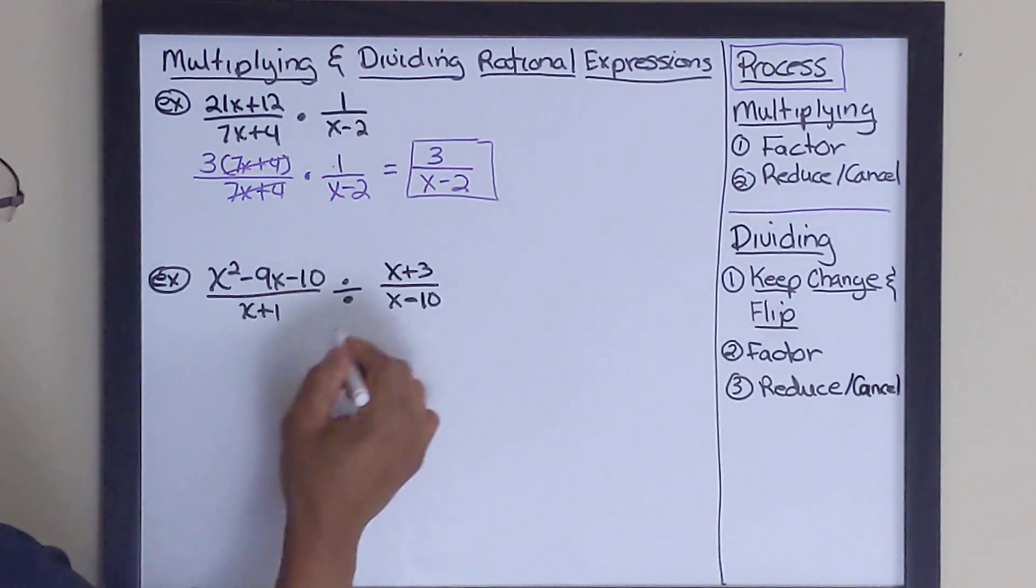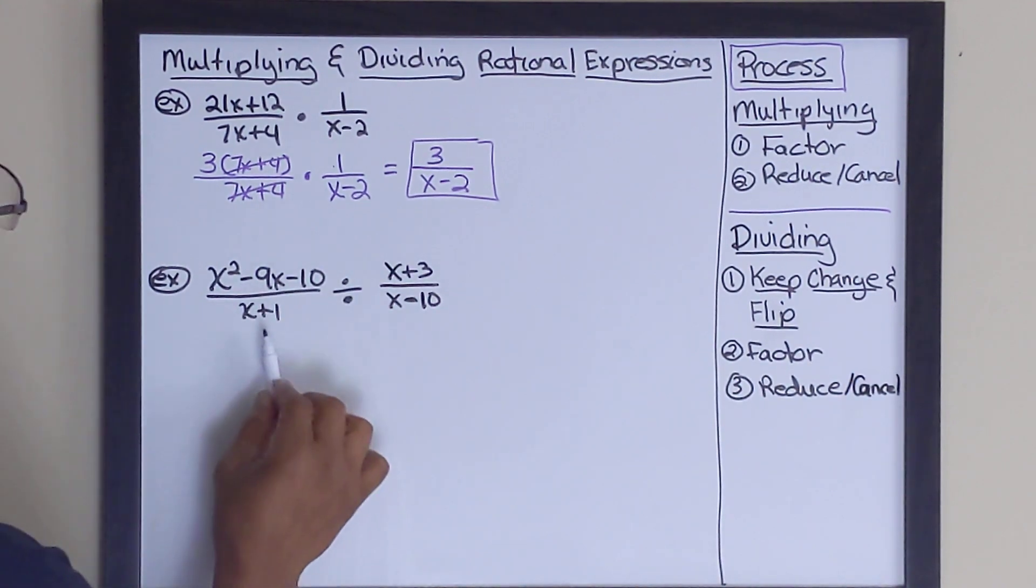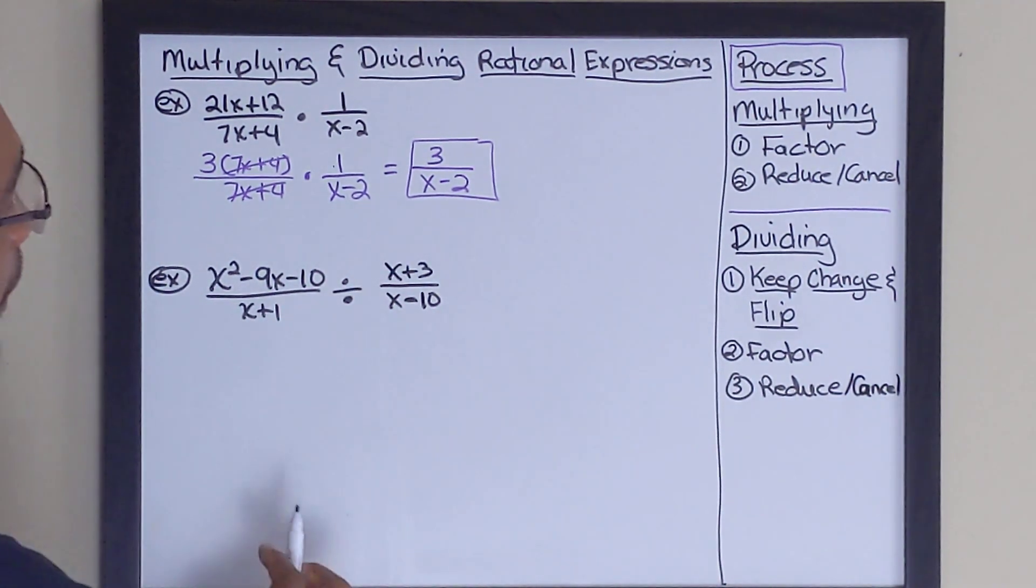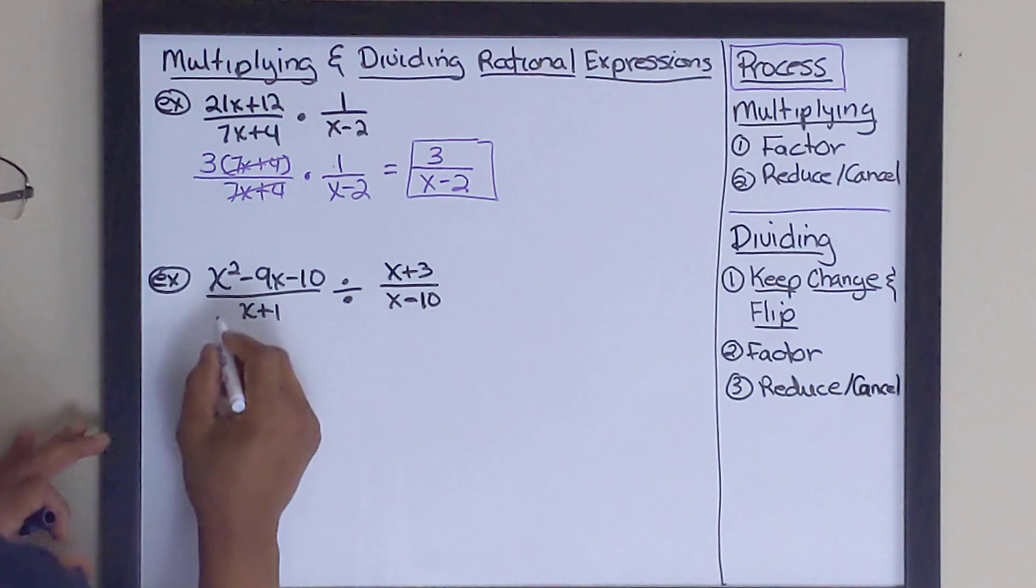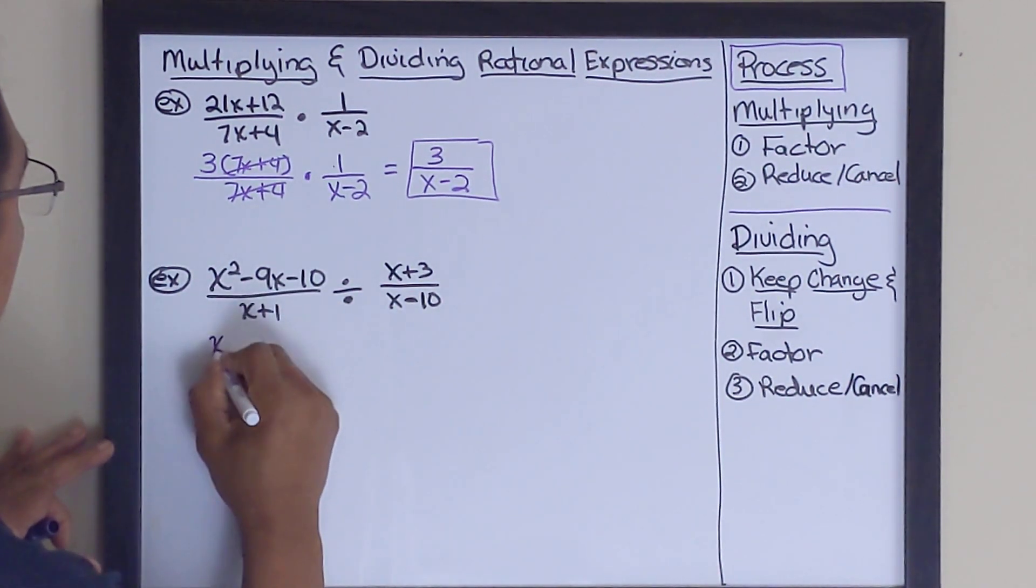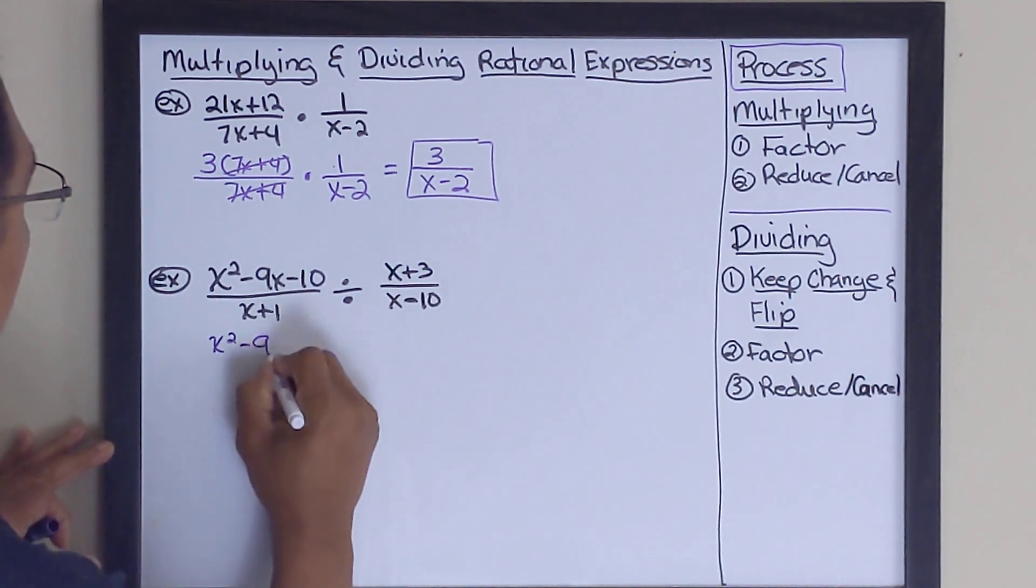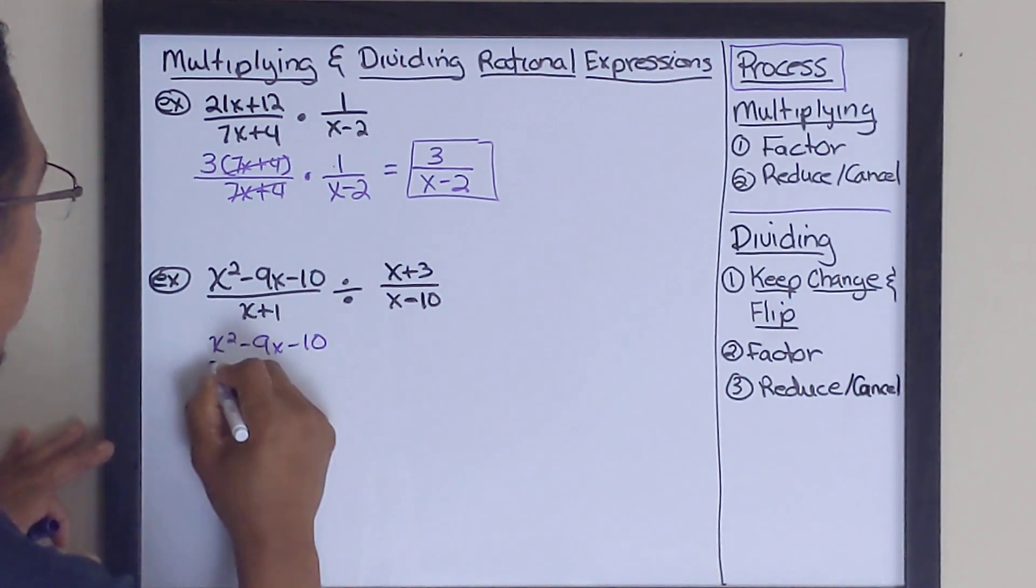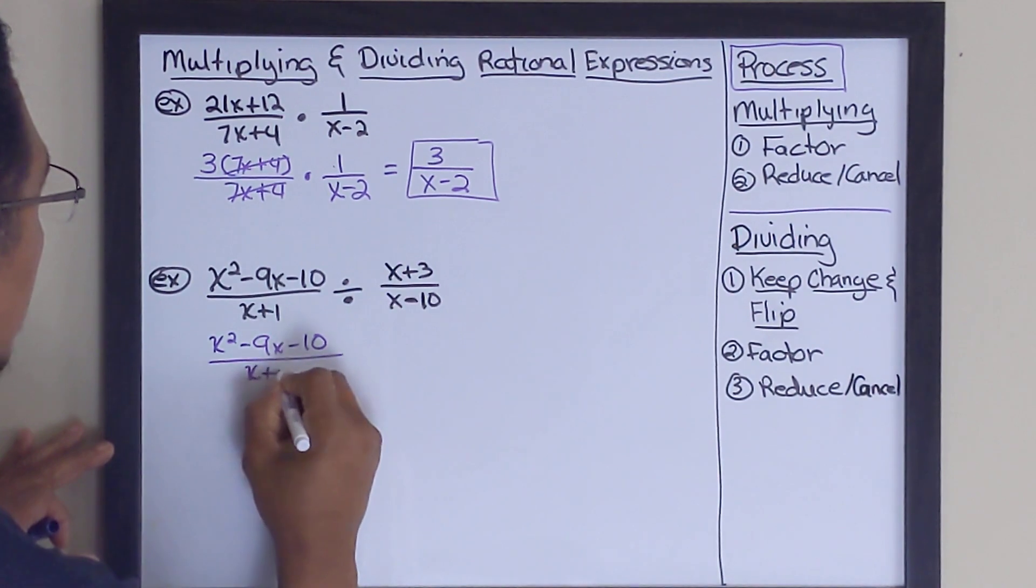So let's look at this problem right here. So let's go ahead and do this process called keep, change, and flip. And what that is, is that basically, we'll keep the first expression as is. So it'll be x squared minus 9x minus 10 divided by x plus 1.